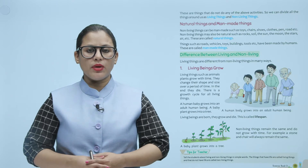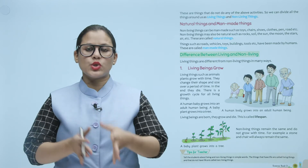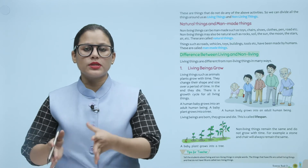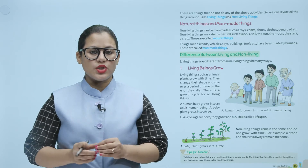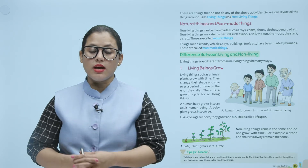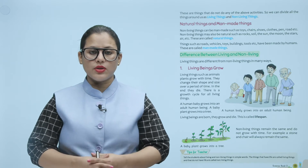We can divide living and non-living things into natural things and man-made things. Non-living things can be man-made, such as toys, chairs, shoes, clothes, pens, roads, etc. Non-living things may also be natural, such as rocks, soil, the sun, the moon, the stars, air, etc. These are called natural things.